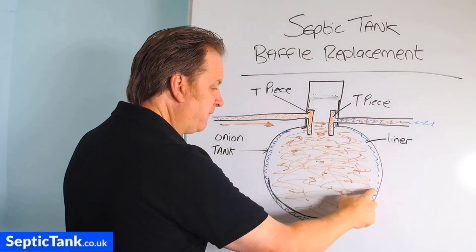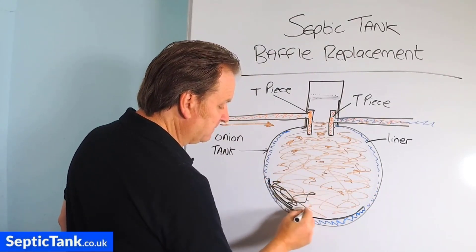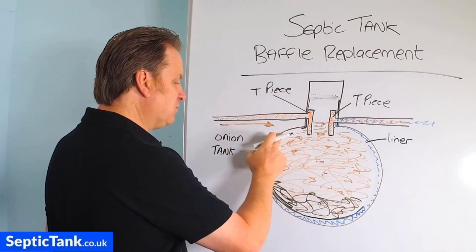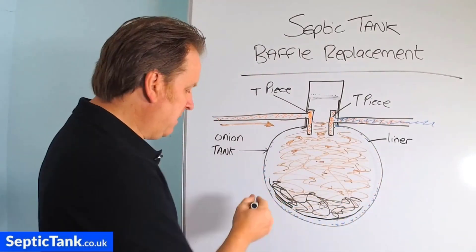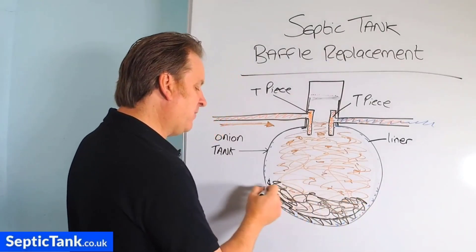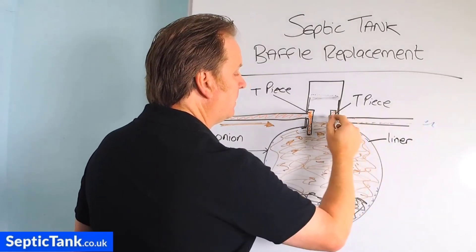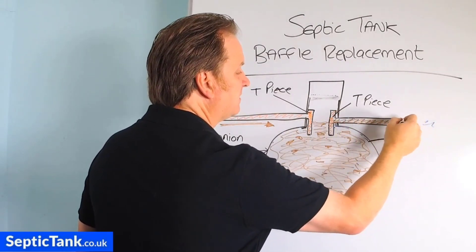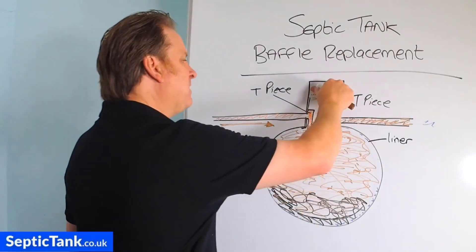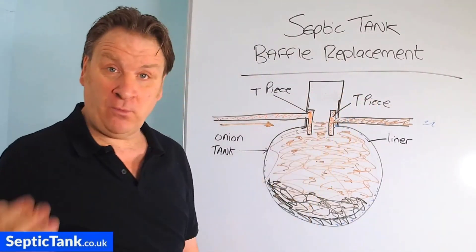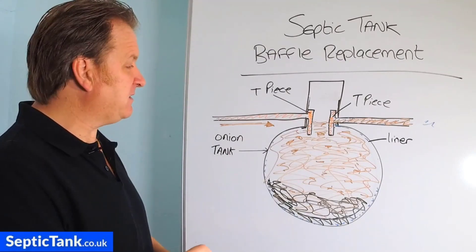Over time, because of the amount of water going through, the black liner sags, tears, or becomes dislodged, then collapses and falls to the bottom of the onion tank — becoming one big mass of plastic. Because no separation can take place anymore, there's nothing to divide the solids, fat, and grease from the wastewater. So instead of clean wastewater leaving into the soakaway, you've got fat, grease, and sludge leaving the tank, which in a year or two will completely block the soakaway.